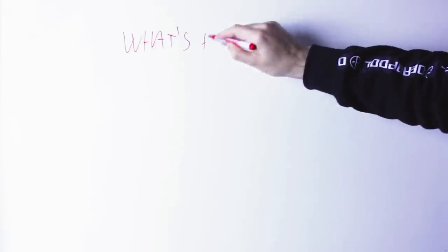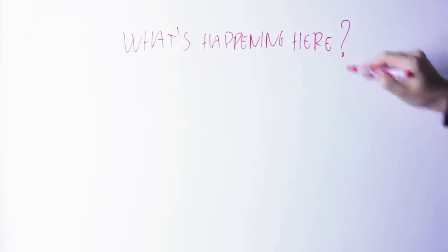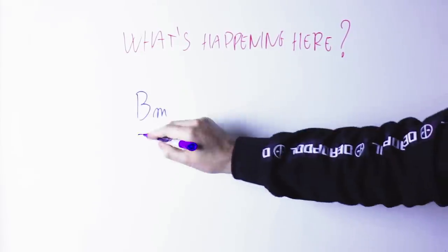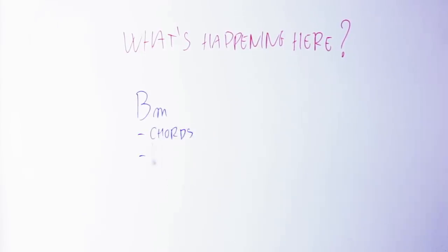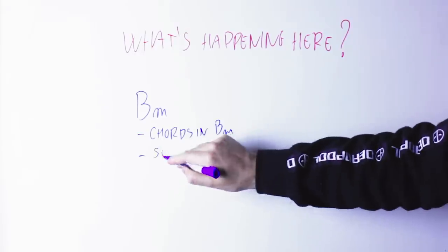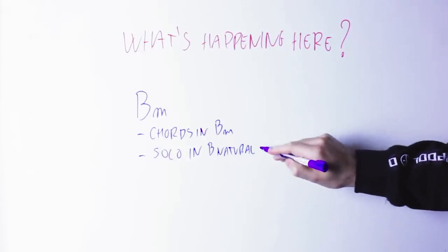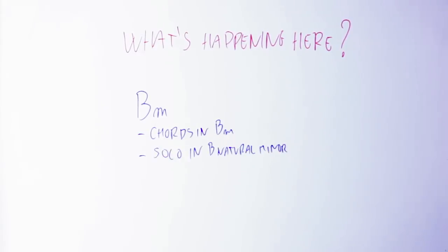So let's see what's happening here. Before the change of key we are in the key of B minor. Why do I say that? Because all the chords are consistent with the key of B minor and the solo is played in the scale of B natural minor.